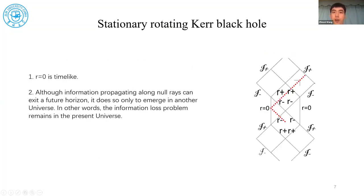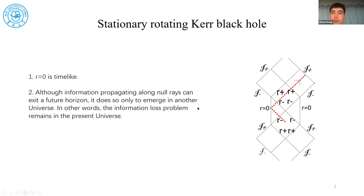For a rotating black hole, things have a little change, because for a rotating black hole the r equals 1 surface is timelike. And if you connect two universes containing a rotating black hole, information can go from one universe to the other. But if you stay in our universe, you still have the information loss problem, because the information can only go to the other universe — meaning within our present universe, we still have this information paradox problem.